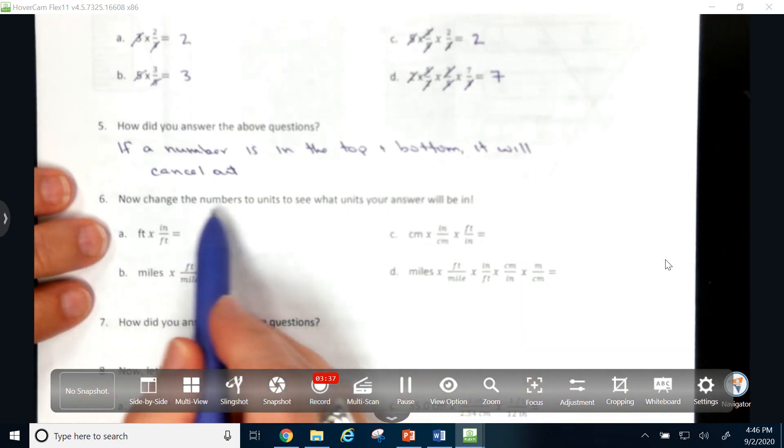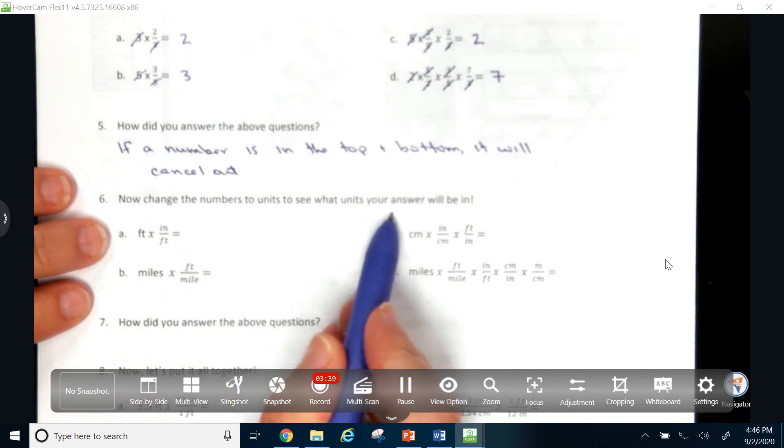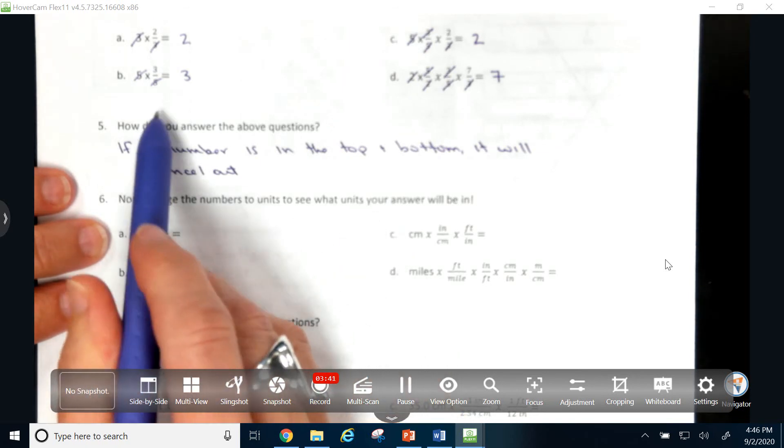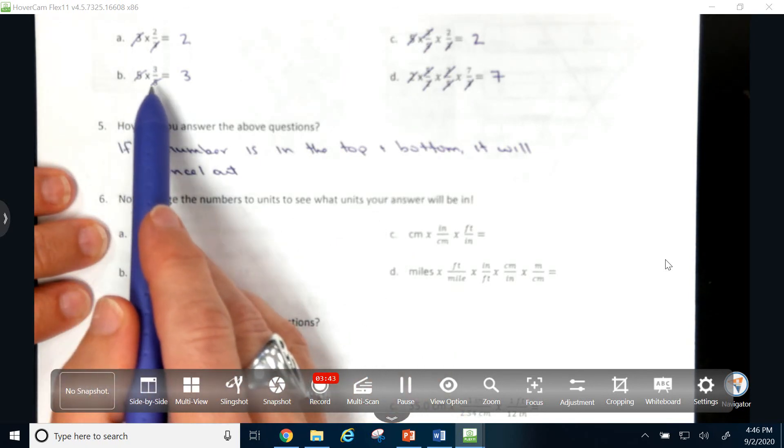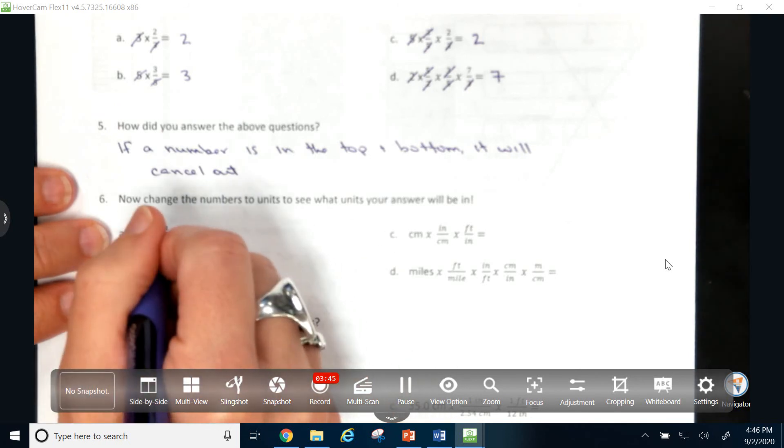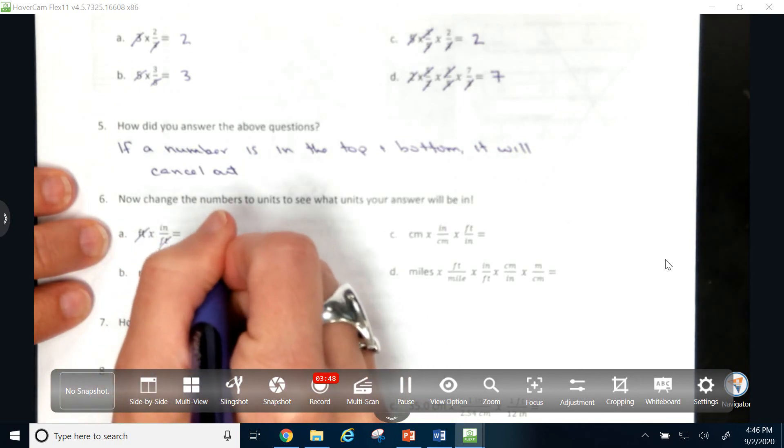So here, it just says, change the numbers to units to see what units your answer will be in. Well, I know that from up here, that if something's in the top and the bottom, it cancels out. So here, I know the feet are going to cancel out, and my answer would be recorded in inches.